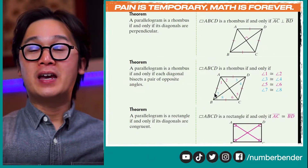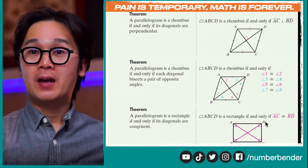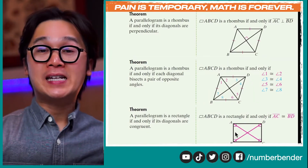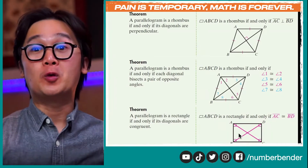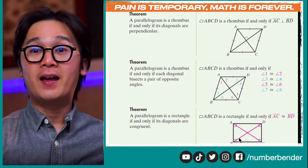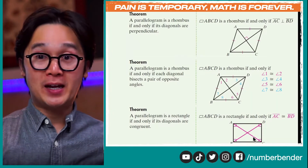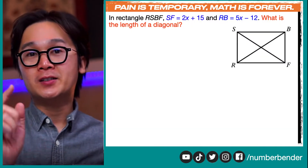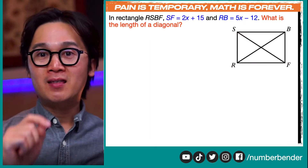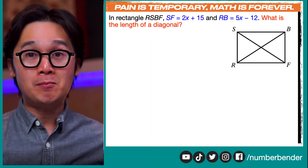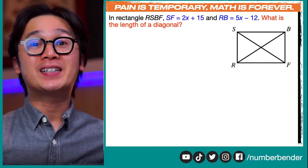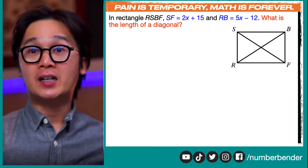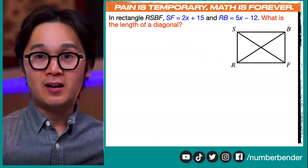For our last theorem, it's about rectangles. We know that in a rectangle, our corners are congruent. When it comes to its diagonals, for a rectangle, those diagonal lengths are congruent, which means the measurement of line segment AC is the same as the measurement of line segment BD. We're going to use these theorems to complete some of the problems we're working on. In this next parallelogram — specifically rectangle RSBF — we are given SF is 2x plus 15 and RB is 5x minus 12, and we're going to find the length of those diagonals.